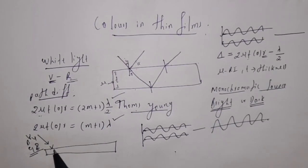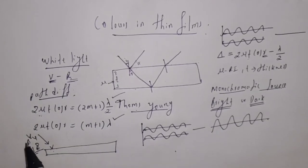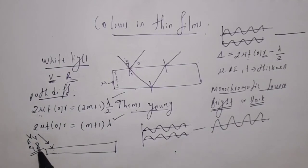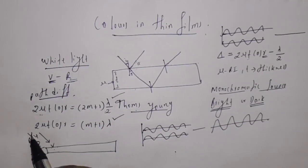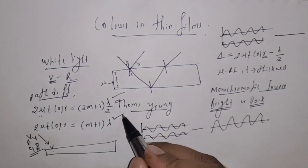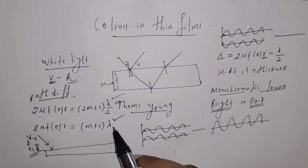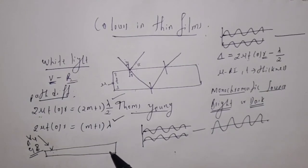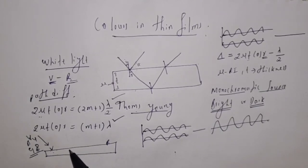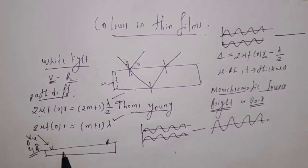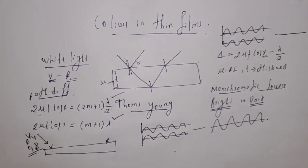The color observed depends on the thickness. Where the thickness is more, violet waves interfere destructively — with path difference 2 mu t cos r equal to (m + 1) lambda — and in this case red light interferes constructively, so we observe red light. In this way, for different thicknesses, some light waves interfere destructively and some interfere constructively. That is why we observe beautiful colors on the thin film.